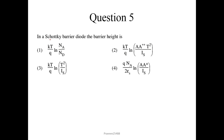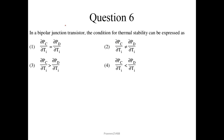Question number 5. In a Schottky barrier diode the barrier height is given by kT/q × ln(A*p²/n). So the correct option is 2. Question number 6. In a bipolar junction transistor, the condition for thermal stability can be expressed as: dPc/dTi should be less than dPd/dTi. So option 4 is the correct answer.